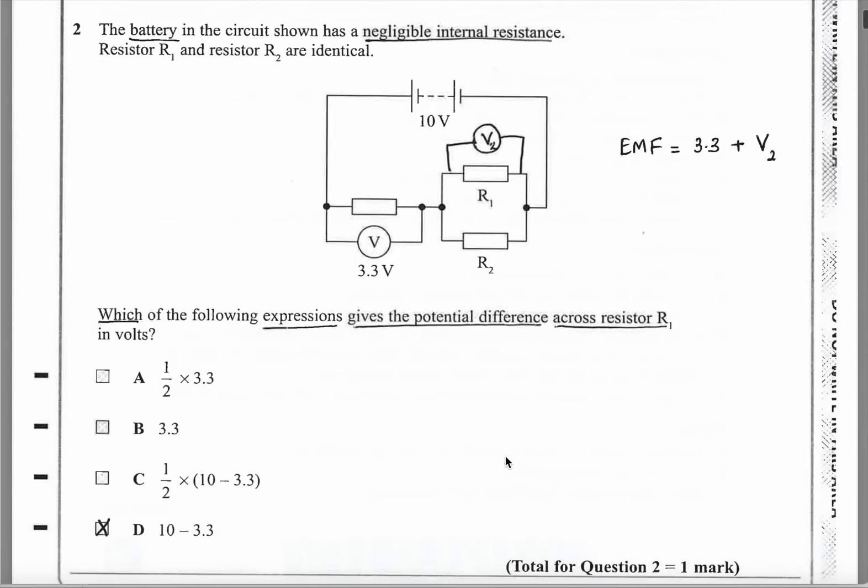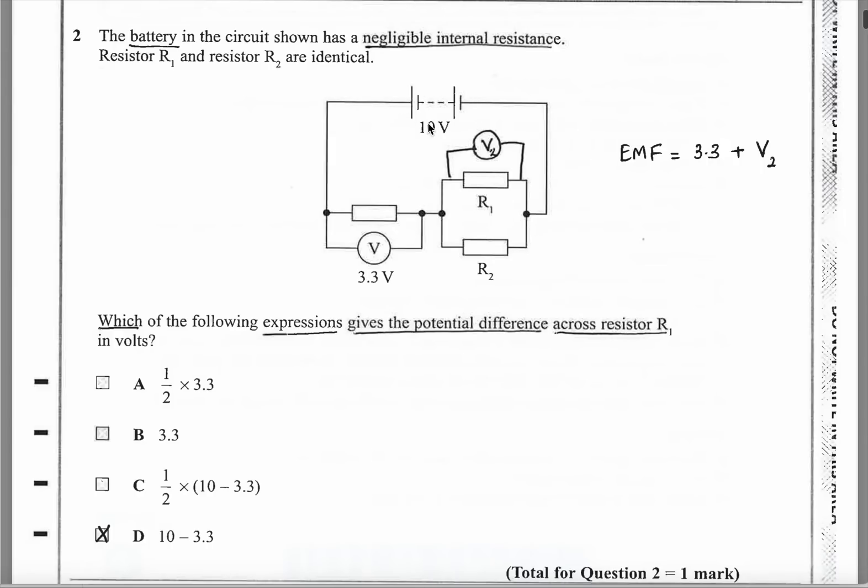Question 2 is about internal resistance of a battery. You've got a 10 volt battery here, and 3.3 volts is across this section here. That means these parallel components must be the rest of the 10 volts. Because we can ignore the internal resistance. They want to know which expression gives the potential difference across resistor 1. If we know that this has got 6.7 volts, then the answer is simply 10 minus 3.3. The answer is D.